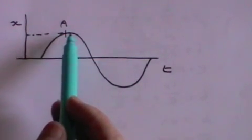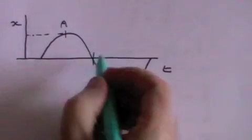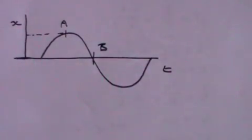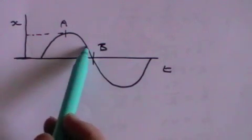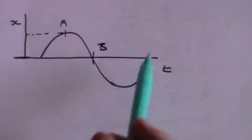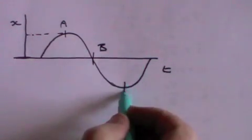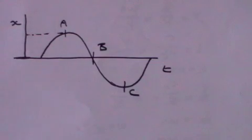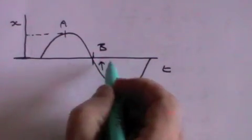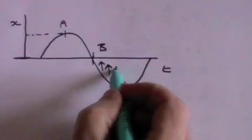At point b, the displacement x is zero, the acceleration is zero, but the velocity is at its maximum and will carry the particle through to point c. But as it passes point b, the acceleration will change direction, and will now push back to the midpoint.